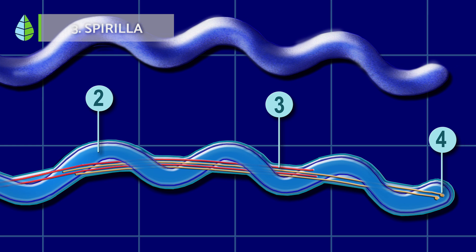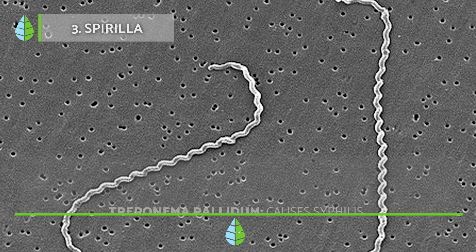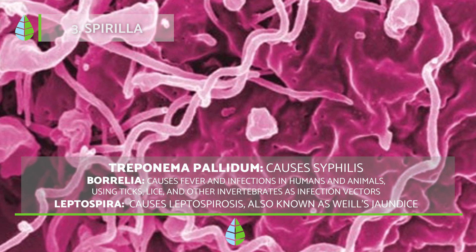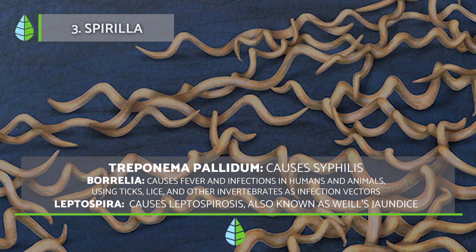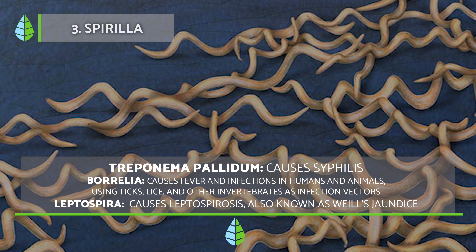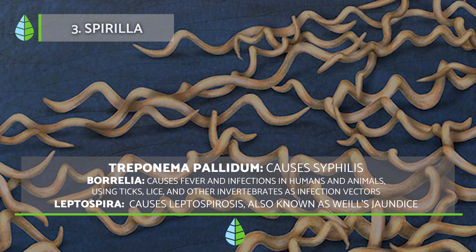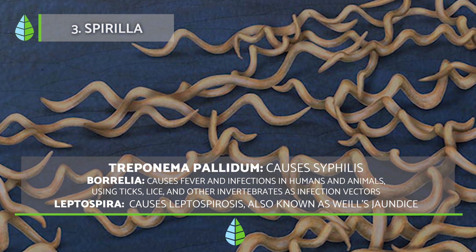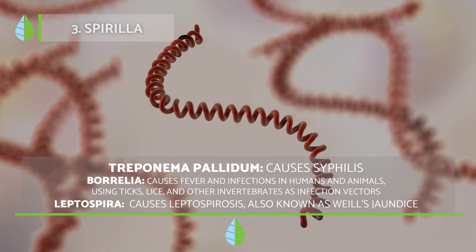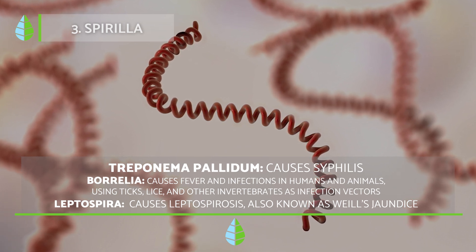Here are some examples of spirilla bacteria and the diseases they cause. Treponema pallidum causes syphilis. Borrelia species cause fever and infections in humans and other animals, and are transmitted by vectors such as ticks and lice. Lastly, Leptospira is responsible for leptospirosis, also known as Weil's disease.